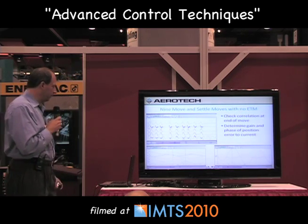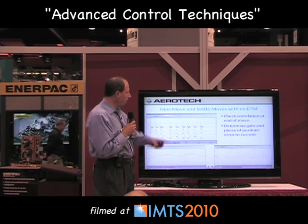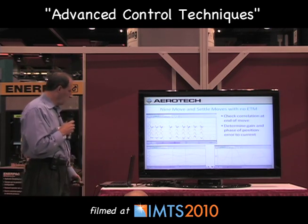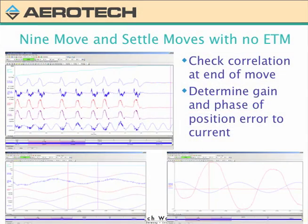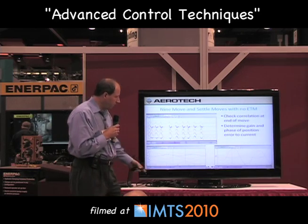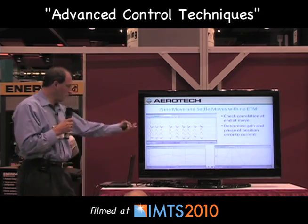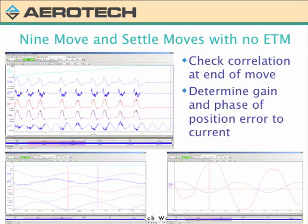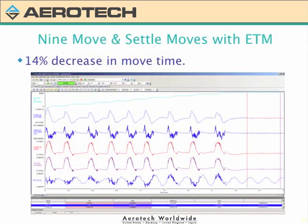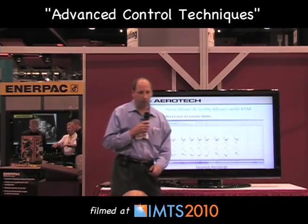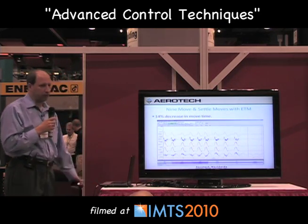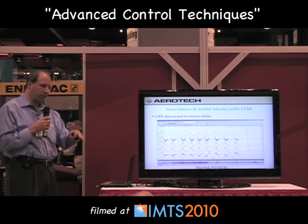Here's one additional example with the ETM. I do nine move-and-settles with no ETM in the system. When you tune this — the way you insert it into the control loop — you have to make sure you appropriately scale and have the right phase for the system. I look at the end of one of these moves and overlay the current and the position error. I can see they're out of phase, and I take the ratio of the peaks to get the gain to insert into the loop. Making the same nine moves, the result is a 14 percent increase in production rate by mounting a sensor package on the base and inserting it appropriately into the controller.